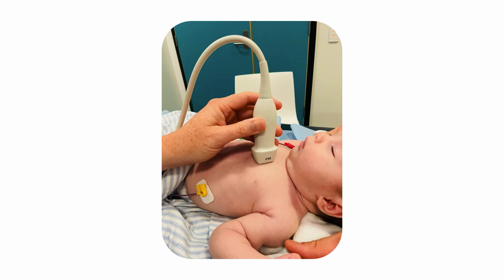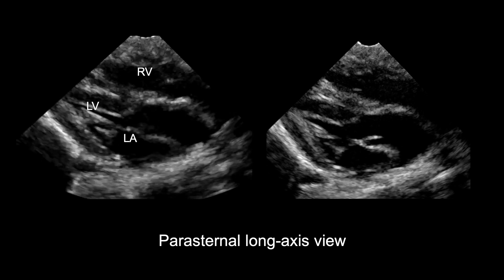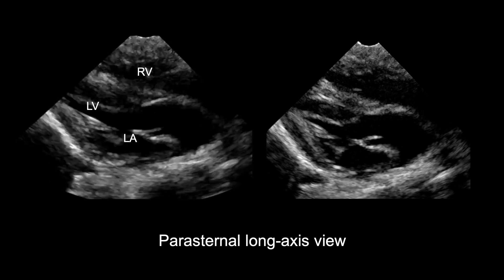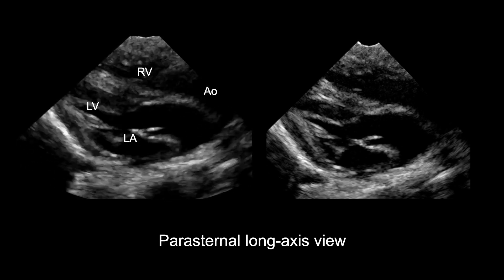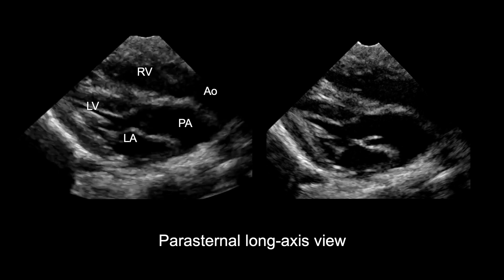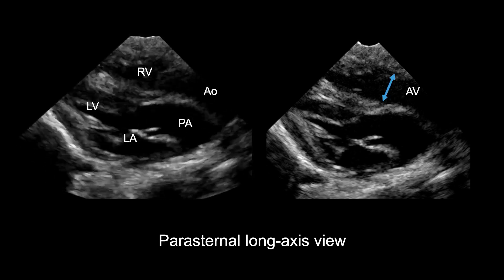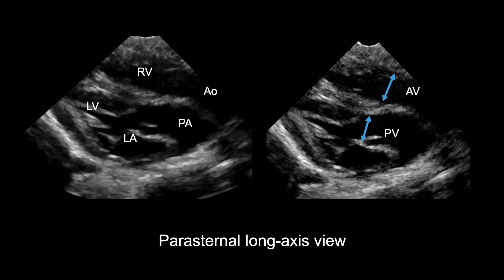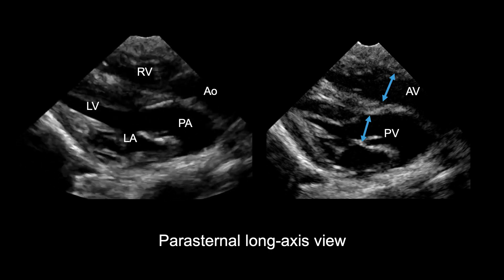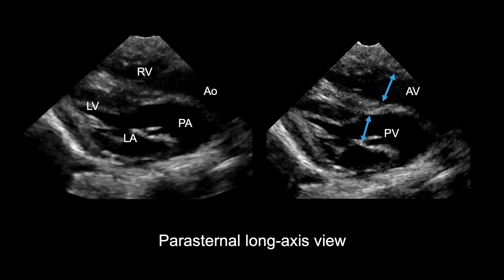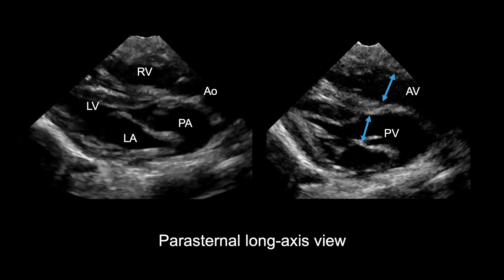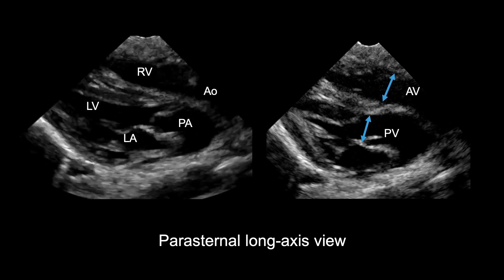Firstly, assess the size and position of the great arteries. To do this, we'll use the parasternal long axis view. Here's an example with the aorta and the pulmonary artery visible. Measure the size of the aortic valve and pulmonary valve in systole with the valves open, as seen in the still image, and comment on any size discrepancy between the outflow tracks.